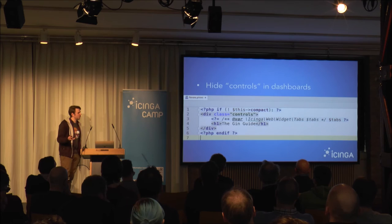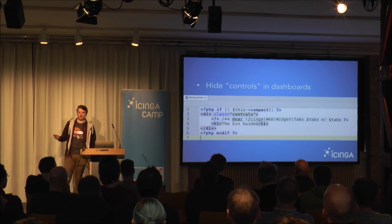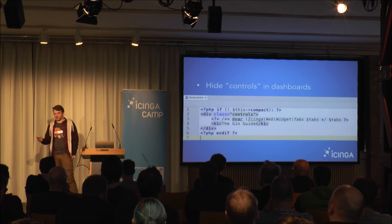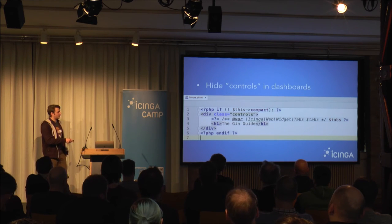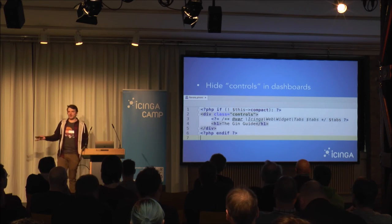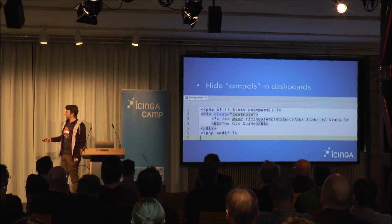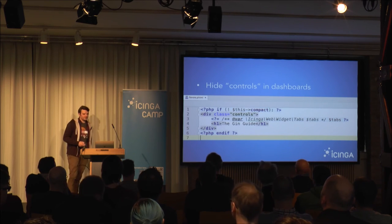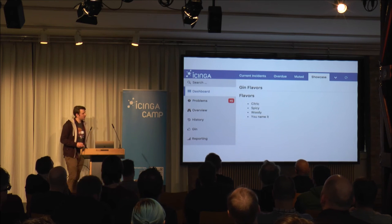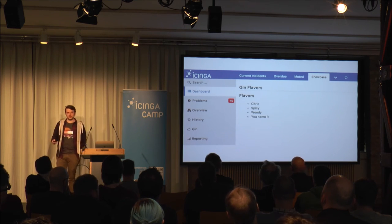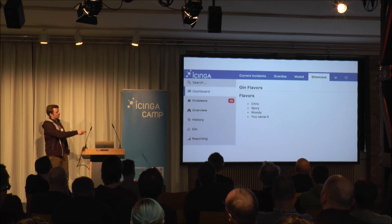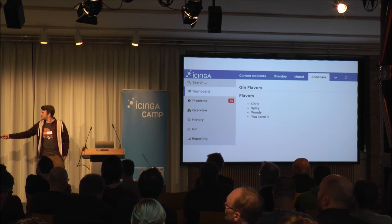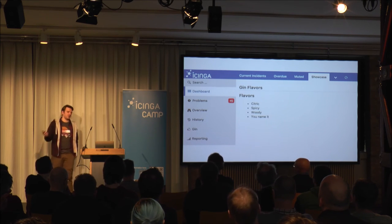We have one thing to do: remember that we added controls to our view script with tabs and a headline. We don't want to show those in the dashboard, so we add a simple PHP condition — when we are not compact, print controls. We are 'not compact' when we are not in the dashboard. This just excludes the controls when the view is rendered from a dashboard. After saving configuration.php and navigating to our dashboard, we see we've added a new 'showcase' dashboard with gin flavors — no tabs, no headline.